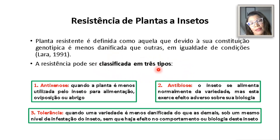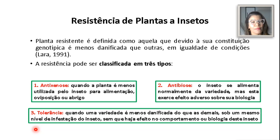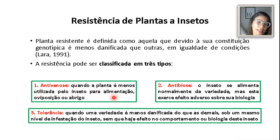A resistência de plantas a insetos pode ser classificada em três tipos: a antixenose, a antibiose e a tolerância. Existem esses três tipos de resistência. A antixenose é quando a planta é menos utilizada pelo inseto para que ele se alimente dela, oviposite ou se abrigue.